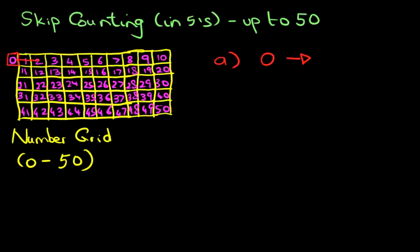we've got 1, 2, 3, 4 and 5. Let's put a circle around it. What number did we land on? We landed on number 5. So the number after 0 if we are counting in fives is 5.